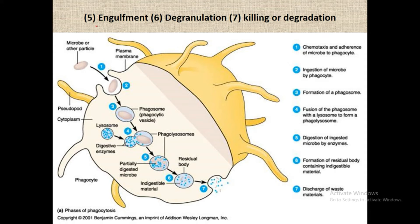The fifth step is engulfment, which means the entry of bacteria inside the phagocyte cell. The phagocyte forms pseudopodia around the bacterial particle — you can see the pseudopodia structure here. When the pseudopodia join together around the bacteria, the bacteria become enclosed inside the cell. This process is known as engulfment.